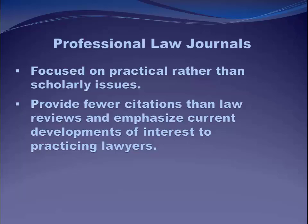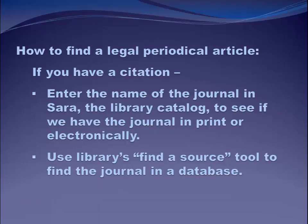How do you find legal periodical articles? It's very easy if you have the citation — it gives you the title of the article, the volume, the journal name, and the page number. If you have all of that, you can just enter the name of the journal in SARA, our library catalog, and it'll tell you right away if we have that journal available in print or electronically. You can also use the library's find-a-source tool, which is probably the better place to go if you have a journal title, and it'll tell you all the different databases that carry that journal.